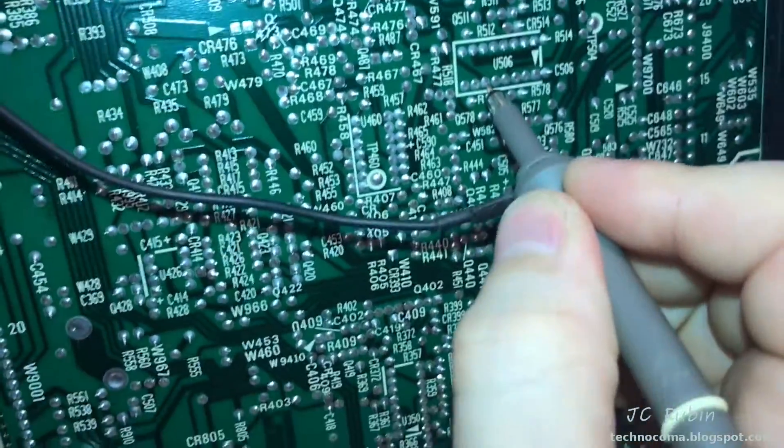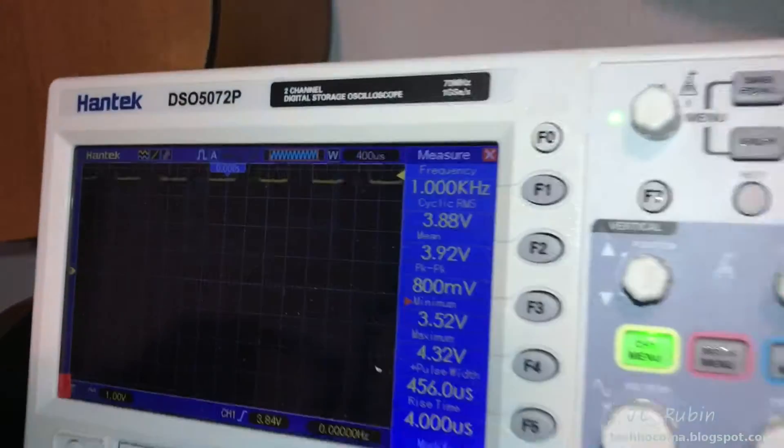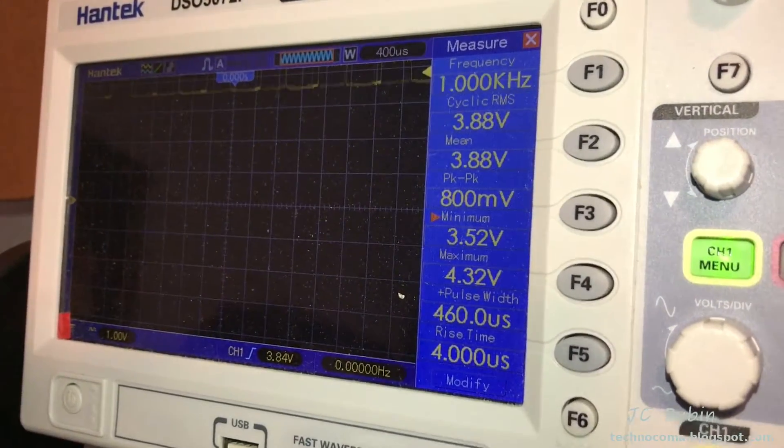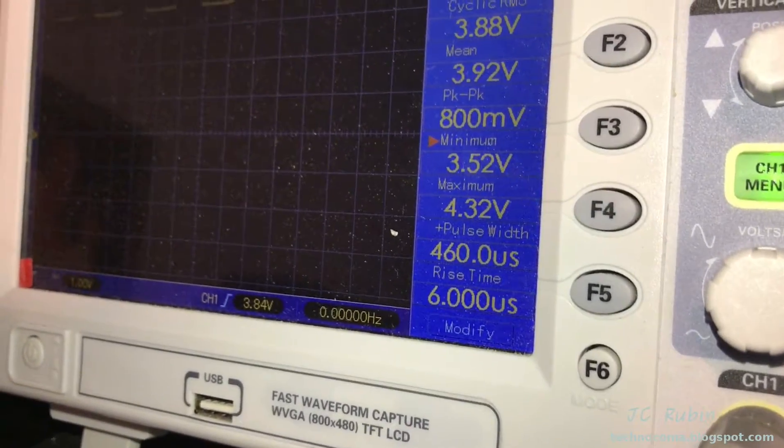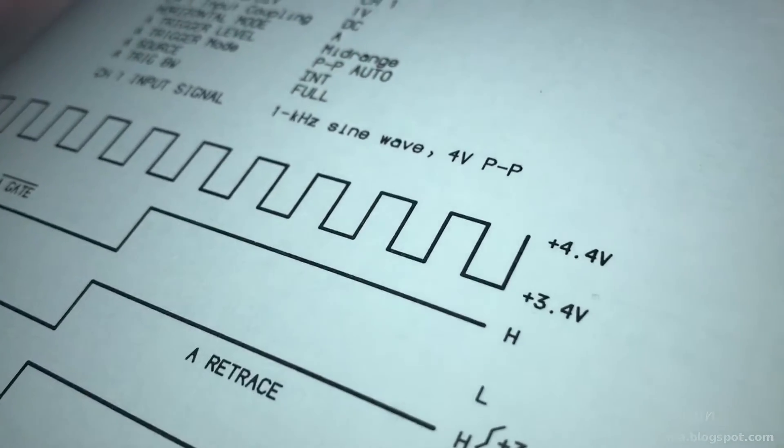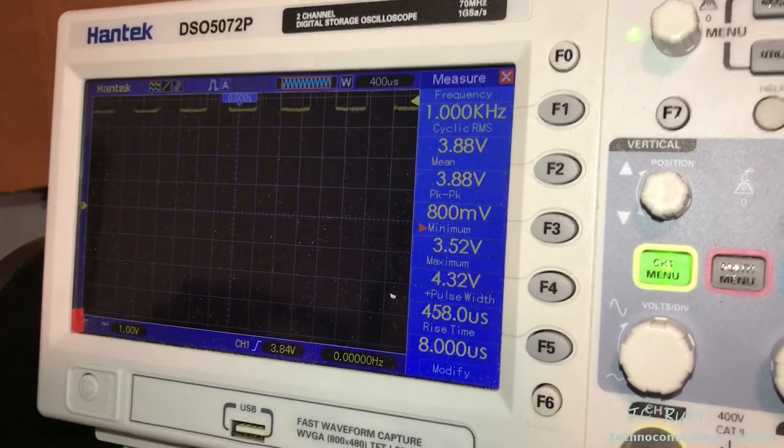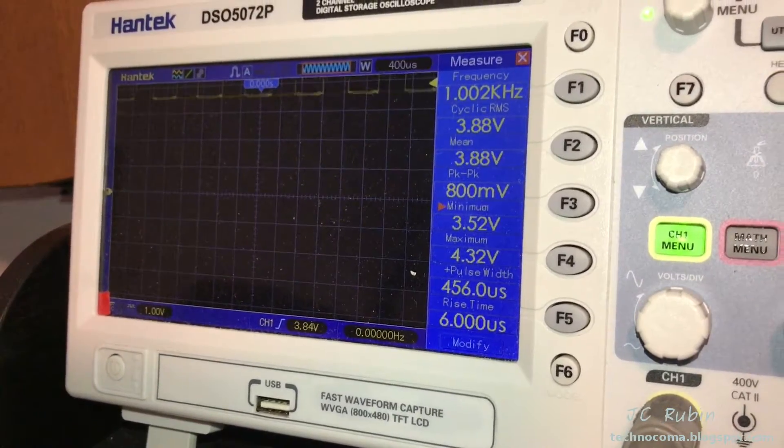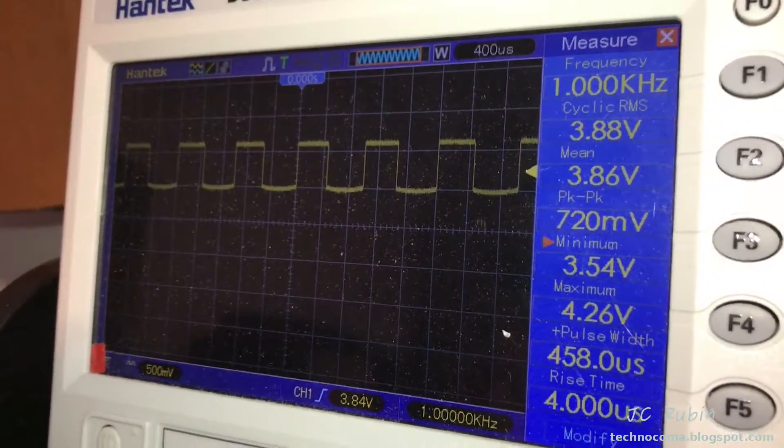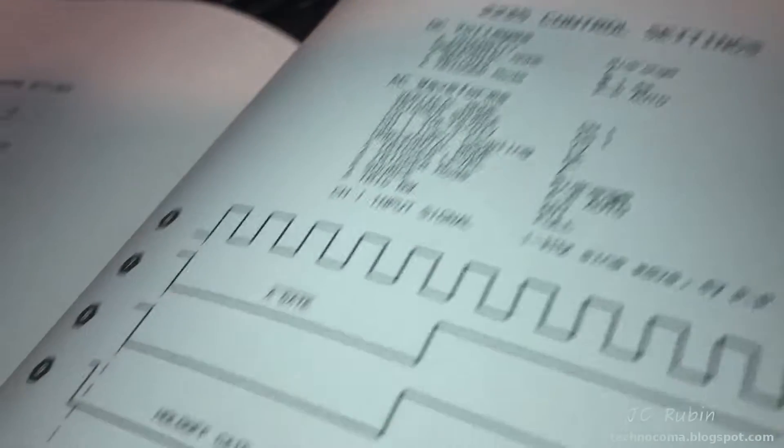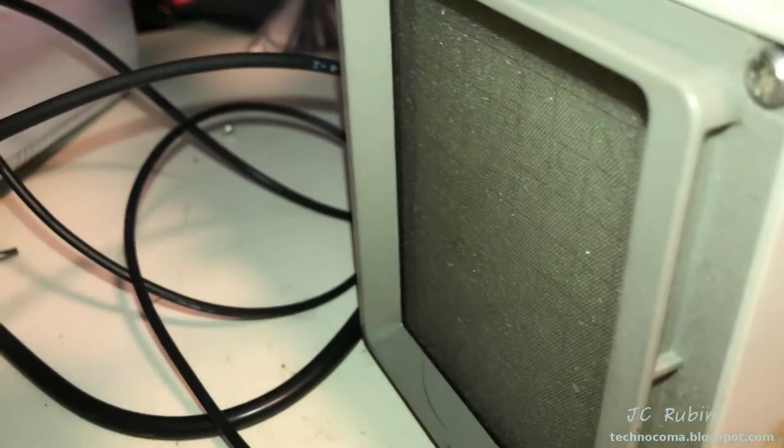I'm going to move on to number one, which is test point six. It sits on U506. While you can't see it on my oscilloscope because it sits a bit high on the screen, you can see the measurement there shows 3.52 to 4.32 volts, and we could see 3.4 to 4.4. It's a nice square wave. I brought it down just so you can have a better look at it. I'm going to say that test point six looks good.